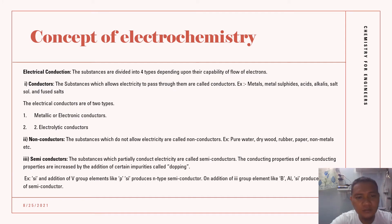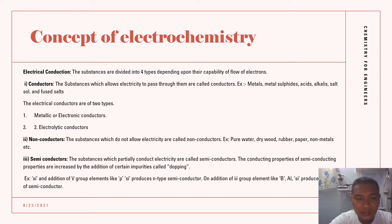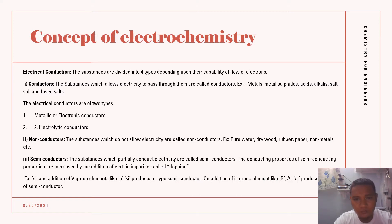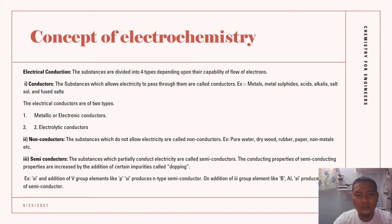Electrical conduction is divided into four types depending upon their capability for flow of electrons. First, we have conductors. Examples of conductors are metals, metal sulfides, acids, alkalized salt solutions, and few salts. These are substances which allow electricity to pass through them — and also the human body.